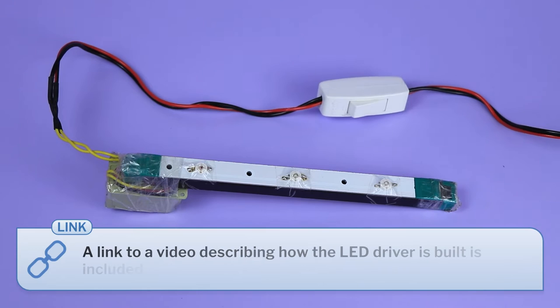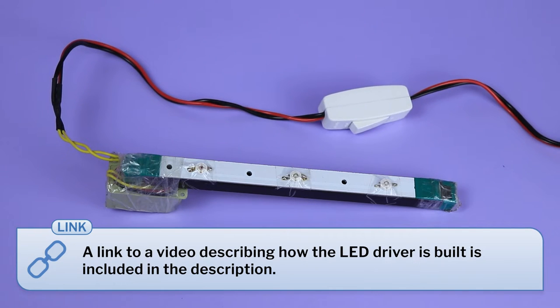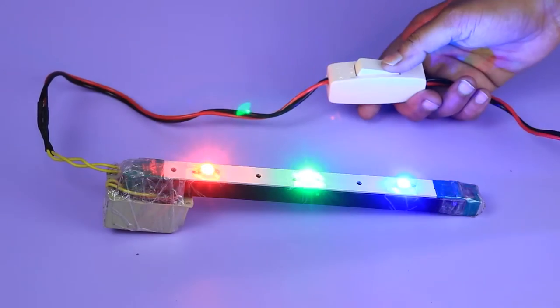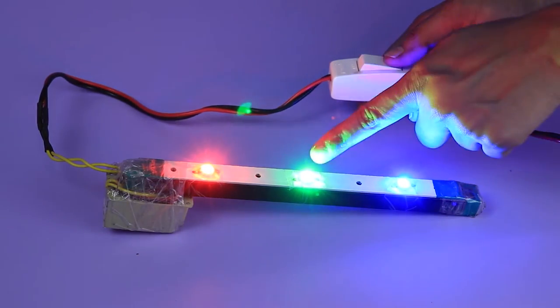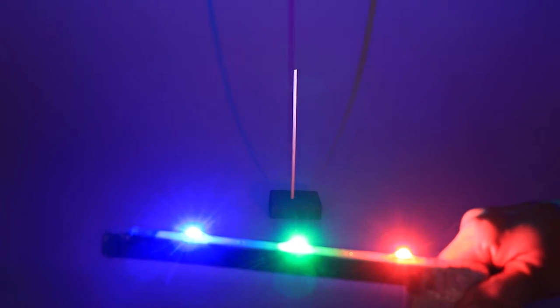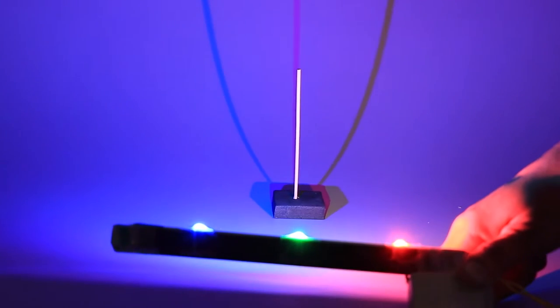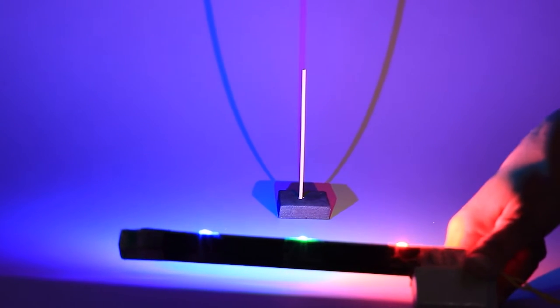I introduced this topic by demonstrating a simple activity called the cool color activity. This activity requires a light emitting diodes driver — an LED driver with red, blue, and green LEDs. Switch on the driver and let the students observe the primary colors on the wall.